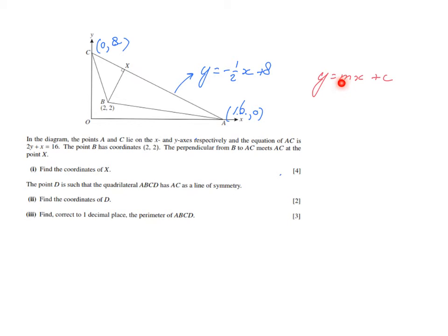So Y equals MX plus C where M is the gradient and C the Y intercept. Now the gradient you can calculate if you have two coordinates but now I only have one coordinate. However they say the line is perpendicular so when two lines are perpendicular then their gradients are each other's negative reciprocal. So if the gradient of AC is minus 1 over 2 then the gradient of BX is going to be 2 over 1 so 2 and the opposite sign so a positive 2. So I flip it around the reciprocal and I change the sign. So the gradient of BX is 2X plus C.